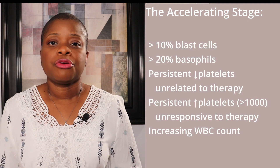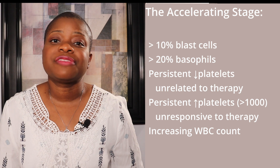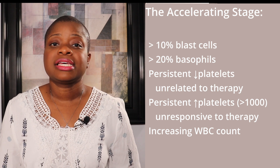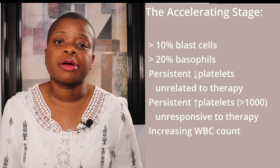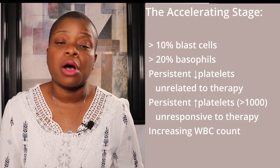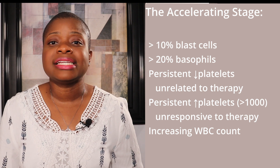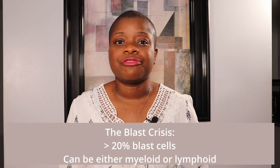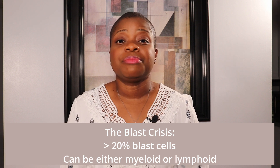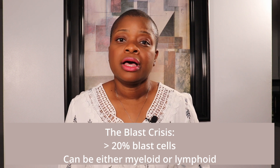The accelerating stage can have one or more of the following: greater than ten percent blast cells, a basophilia greater than 20 percent, either a persistent thrombocytopenia unrelated to therapy or persistent thrombocytosis unresponsive to therapy, or an increasing WBC count, among other criteria. The blast crisis is as sinister as it sounds and can have a blast count greater than 20 percent that can be myeloid or lymphoid, along with other criteria — the patient's chronic leukemia is transforming to an acute leukemia.